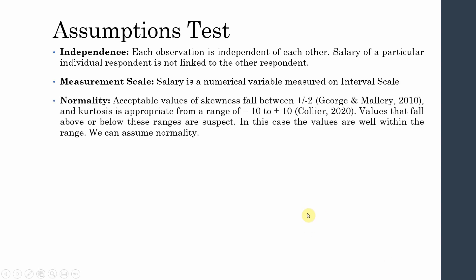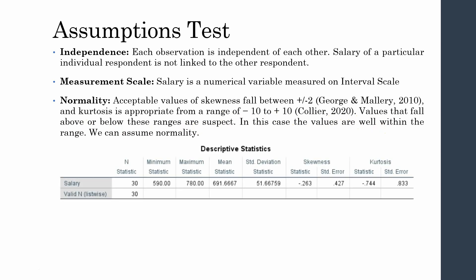For normality, acceptable values of skewness fall between ±2 (George & Mallory, 2010) and kurtosis is appropriate in the range of −10 to +10 (Collier, 2020). Values outside these ranges are suspect. In this case, the skewness is −0.263 and the kurtosis is −0.744, both well within the acceptable range, so normality can be assumed.